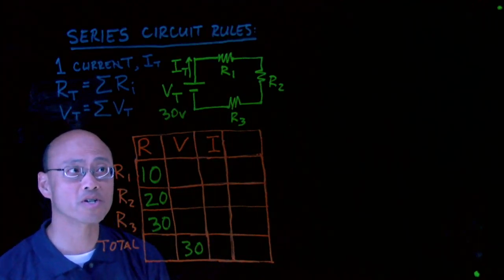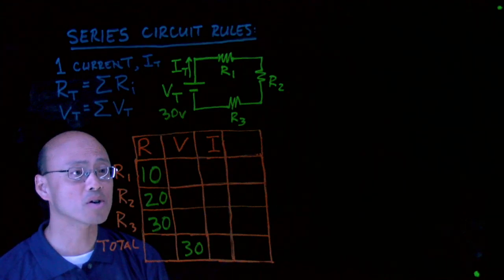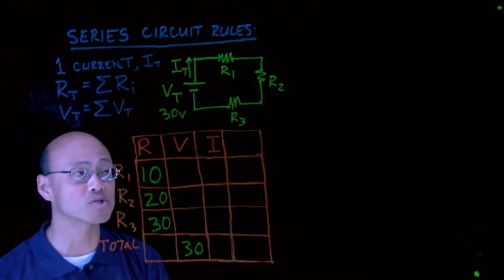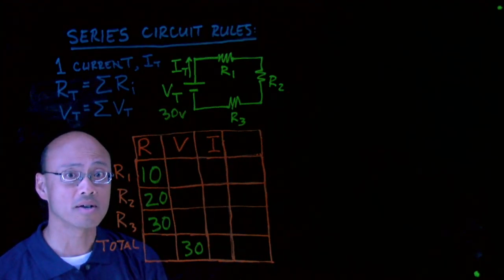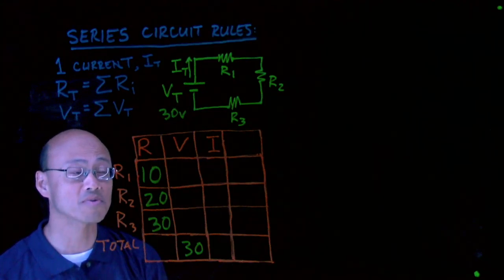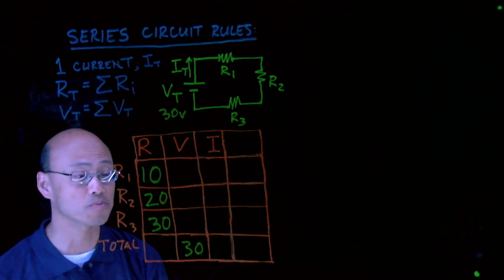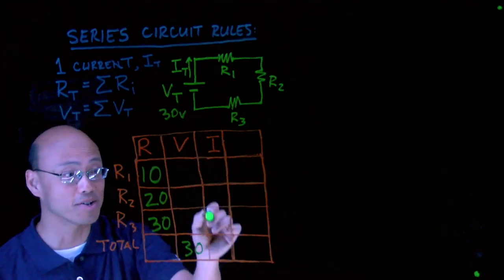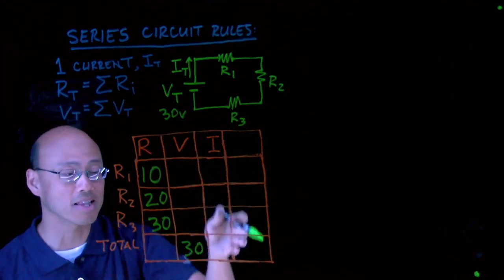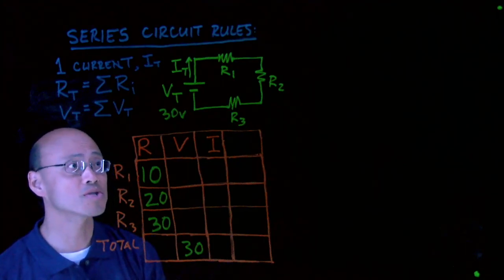So a typical question might be, determine all the voltages, how much voltage is dropped across each resistor, and determine how much current is flowing through the circuit, and determine the total resistance of the circuit. All three of those things. So that's basically saying fill in all these boxes, except for that last column.